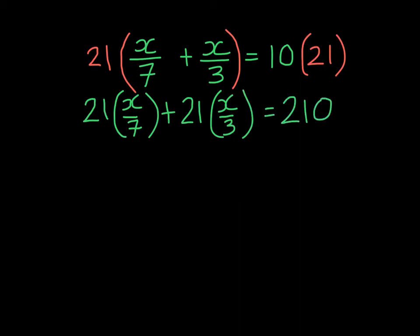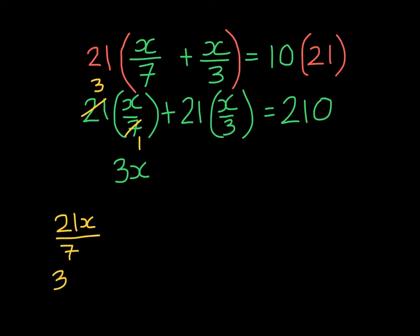I'll write these steps out: 21 times x over 7, plus 21 times x over 3, is equal to 210. Now, I'm going to divide 7 by 7 — it gives me 1, and 21 by 7 gives me 3. I'll end up with 3x. If you don't like that, you could multiply 21 times x and then in the denominator you have 7. We know that that reduced is 3x. I just did the canceling to reduce it faster.